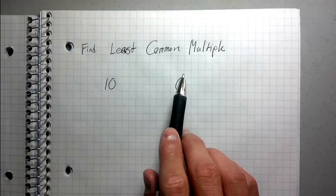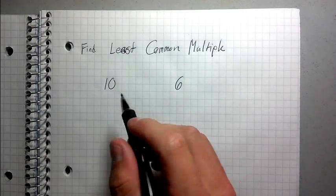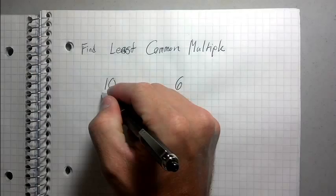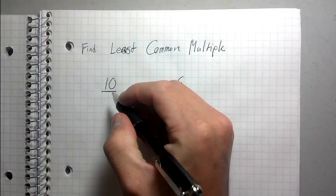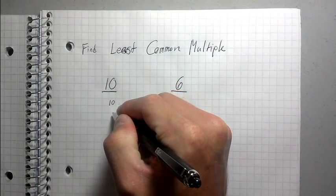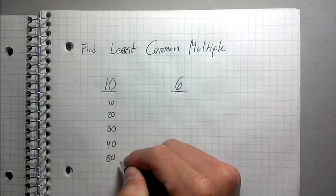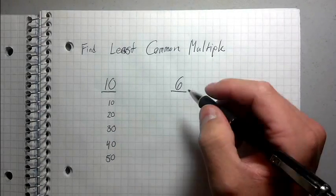So watch what I'm going to do here. So what I'm going to do is I'm going to begin by listing the multiples of 10. So I'm going to draw a line here, I'm going to draw a line here, I'm going to list the multiples of 10. So here's 10, 20, 30, 40, 50, et cetera.